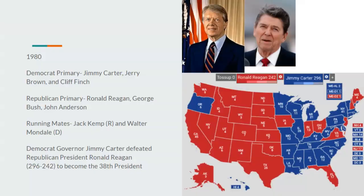After 16 years of a skyrocketing economy, the economy crashes during Reagan's first term and unemployment skyrockets — this is essentially the Great Recession for this time. Democrats look toward Jimmy Carter, the runner-up from last time and also a Southerner. Jerry Brown and Cliff Finch also run but are very unsuccessful. In the Republican primary, Reagan is challenged by the former CIA director who resigned to run against him, and by Illinois Congressman John B. Anderson. Reagan still picks up 60% of the primary vote. Carter chooses Walter Mondale as his running mate; Jack Kemp remains Reagan's. Democrat Governor Jimmy Carter defeats Republican President Ronald Reagan 296 to 242 to become the 38th President of the United States.